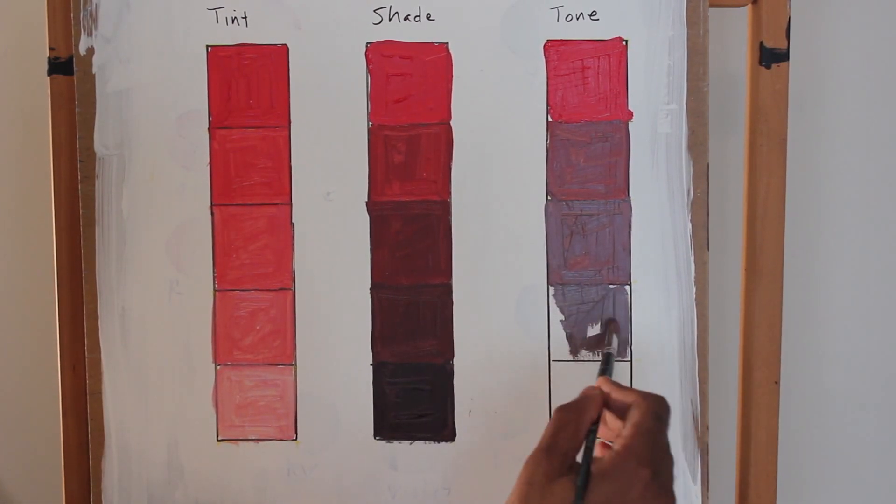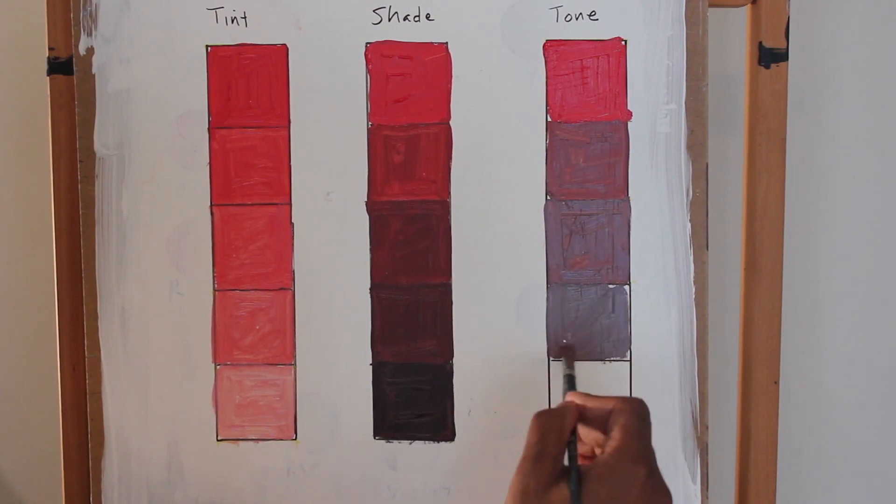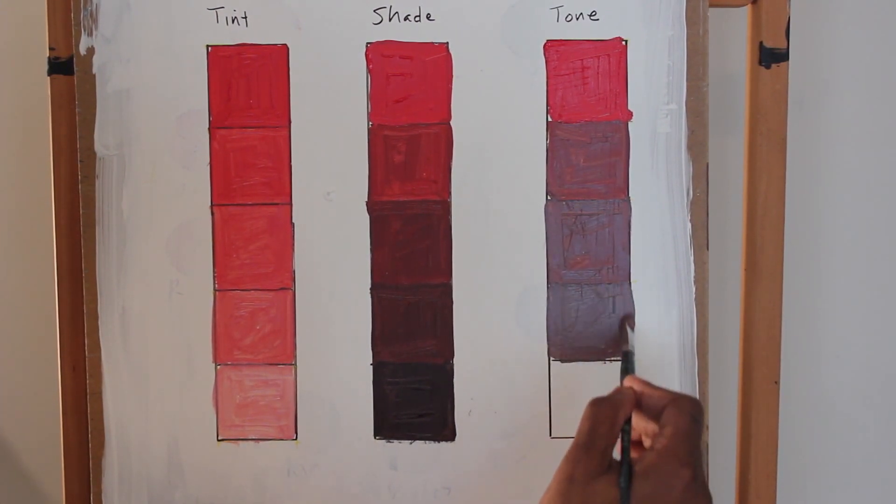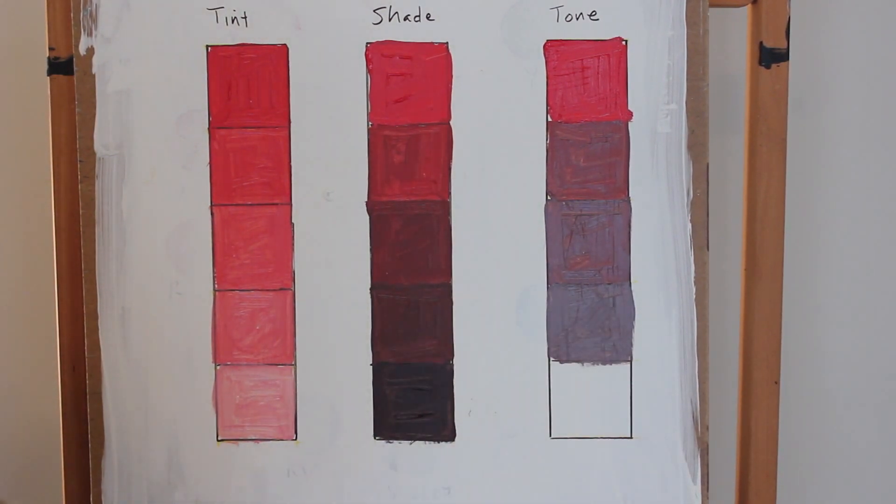As you can see, the fourth square is almost close to gray. It almost looks gray, but you still see the red. On my last square, I want to just have just a little red in it and mostly gray, so you'll be able to see that. This is the last square in the column.